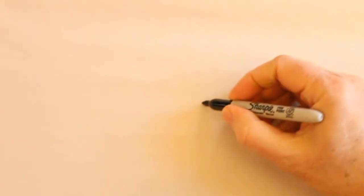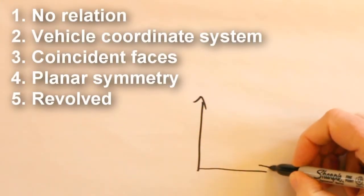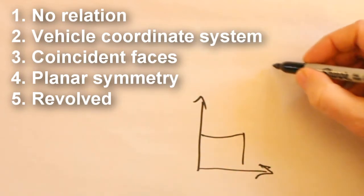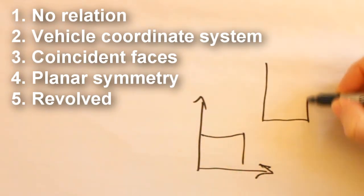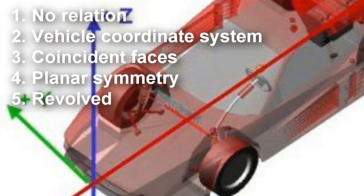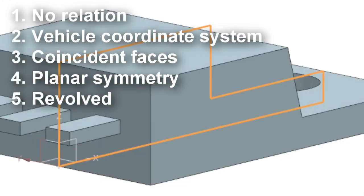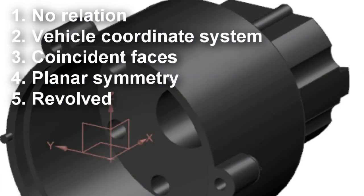Before we move on, let me quickly review the five basic ways we've talked about to design a part relative to the datum coordinate system. Number one, no relation. This is discouraged. Number two, a vehicle coordinate system. Number three, making the part faces coincident with the datum planes. Number four, planar symmetry. And there can be more than one plane of symmetry in the part. Number five is revolving the part about a datum axis.